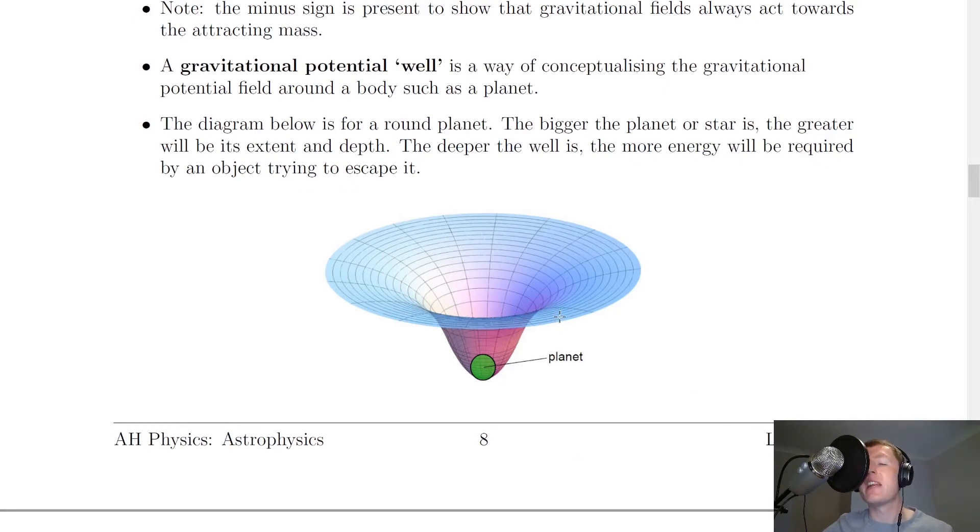And just to show you this as an animation. So ignoring all of this and just looking at the words in bold below there, it says that an object of mass M near the earth will fall down the well unless it has sufficient kinetic energy to escape. The mass will then be captured by the earth or other planet or star.